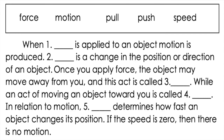Let us apply what you have learned by completing the missing word in each sentence. When blank is applied to an object, motion is produced — very good, that is force. Blank is a change in the position or direction of an object — good job, children, that is motion. Once you apply force, the object may move away from you, and this act is called — very good, that is push. While an act of moving an object towards you is called — good job, that is pull. In relation to motion, blank determines how fast an object changes its position — that is speed. If the speed is zero, then there is no motion.